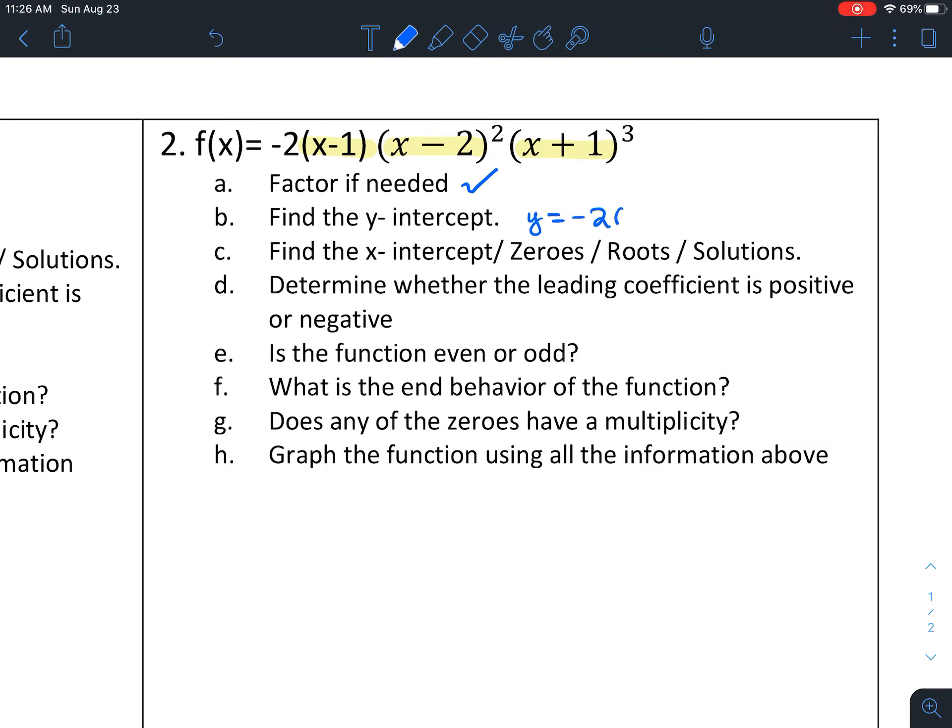But in this case, this is different. So you are actually going to have to substitute 0 and do the math here. Let's see what we get. We get negative 2 times negative 1 times 4 times 1, and this will be a multiplication sign. That will be a positive 8.